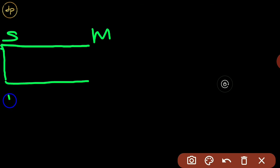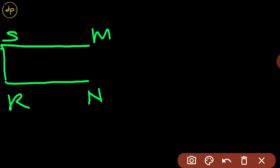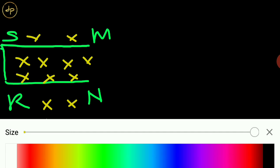Consider a conducting frame. Let us name it MS, RN. And there is a uniform magnetic field perpendicular to this frame, shown inward by these cross points. Everywhere uniform magnetic field is present. And the resistance of this frame is zero. And over it there is a conductor.